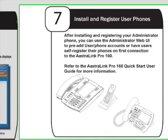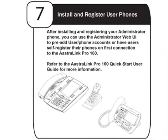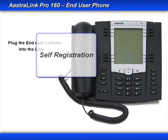Step 7: Install and register user phones. The user phones can be installed by either using the administrator web user interface or by allowing the user to self-register their phone. This is done by plugging the phone into the LAN and answering a few simple questions. I'll demonstrate the self-registration process first.